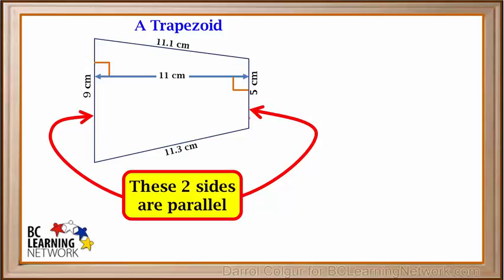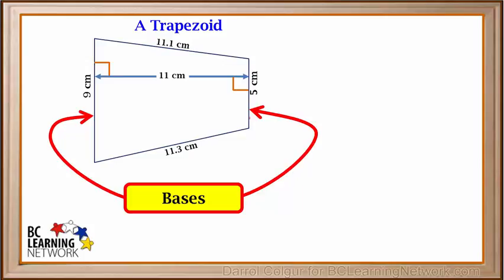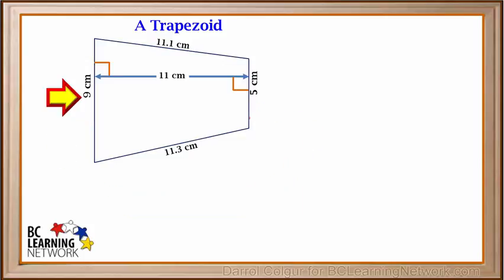In a trapezoid, the two parallel sides are called bases. It doesn't matter how we label these two bases, so we'll call this one B1 and we'll call this one B2.